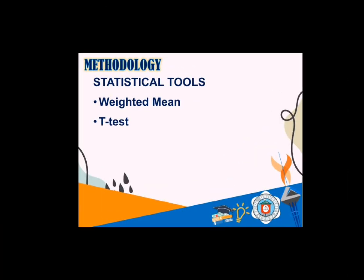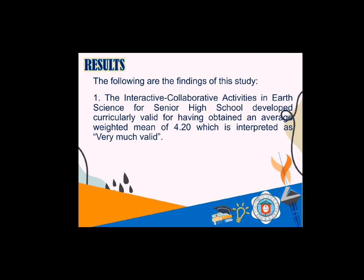Statistical tools used in the study are the weighted mean and the t-test. The weighted mean was employed to determine the average of the result of the curricular validation of the interactive collaborative activities evaluated by science teachers. The t-test for correlated samples is used when comparing the means. For number one result, the interactive collaborative activities in earth science for senior high school developed curricularly valid, having obtained an average weighted mean of 4.20, which is interpreted as very much valid. The criteria are subject matter, social-cultural content, language readability, activities, and strategies.